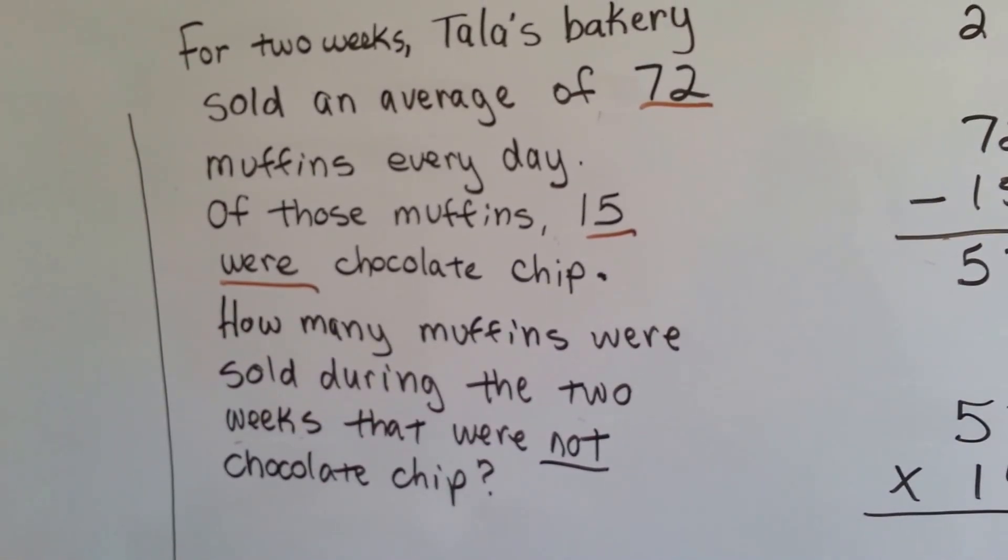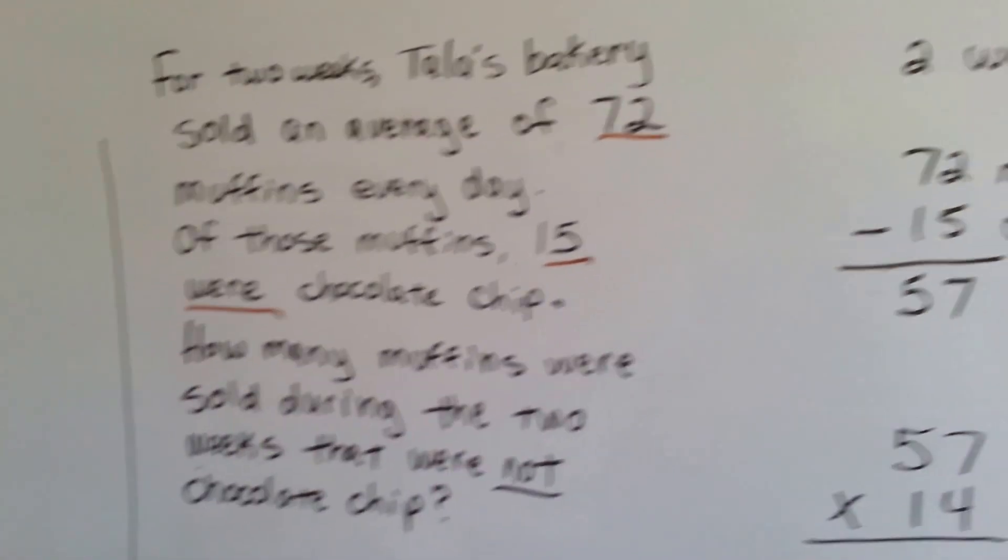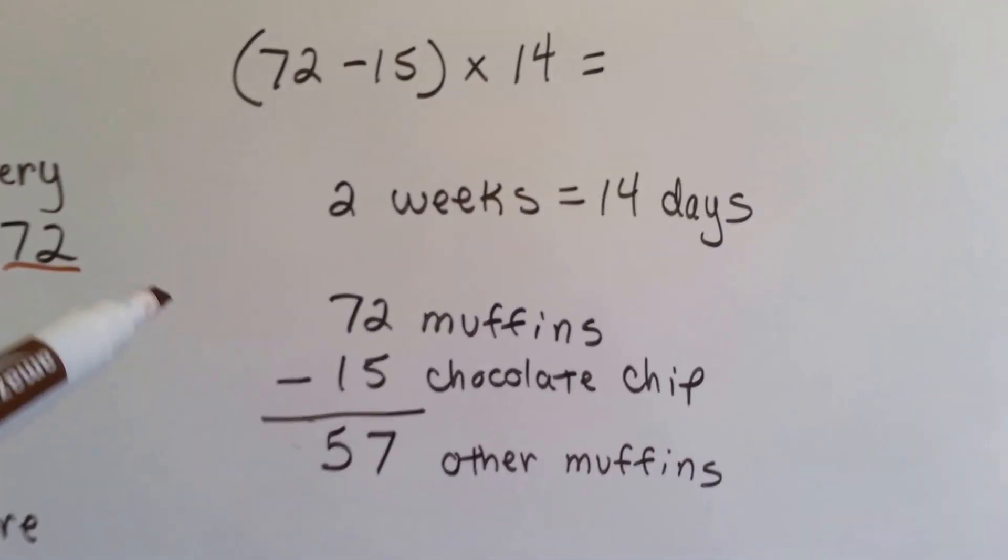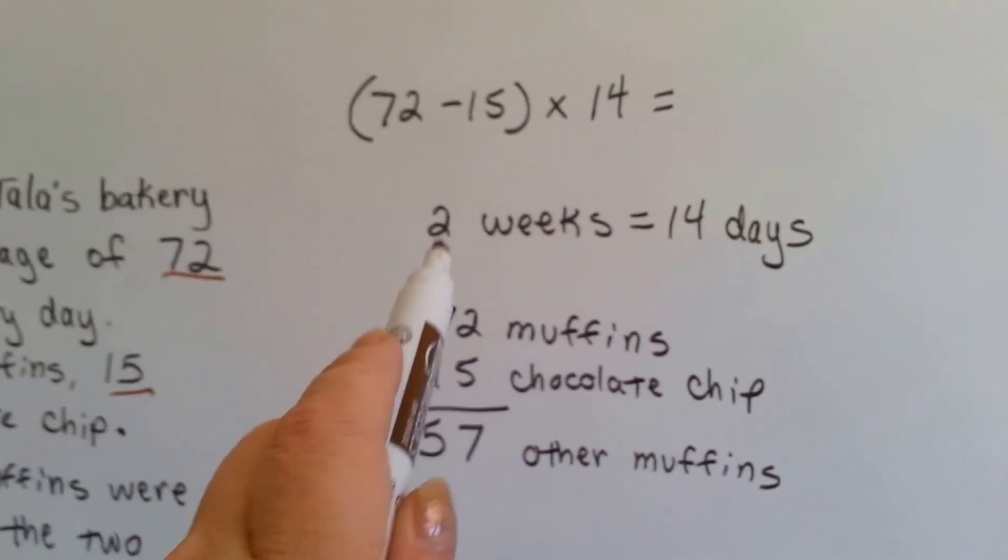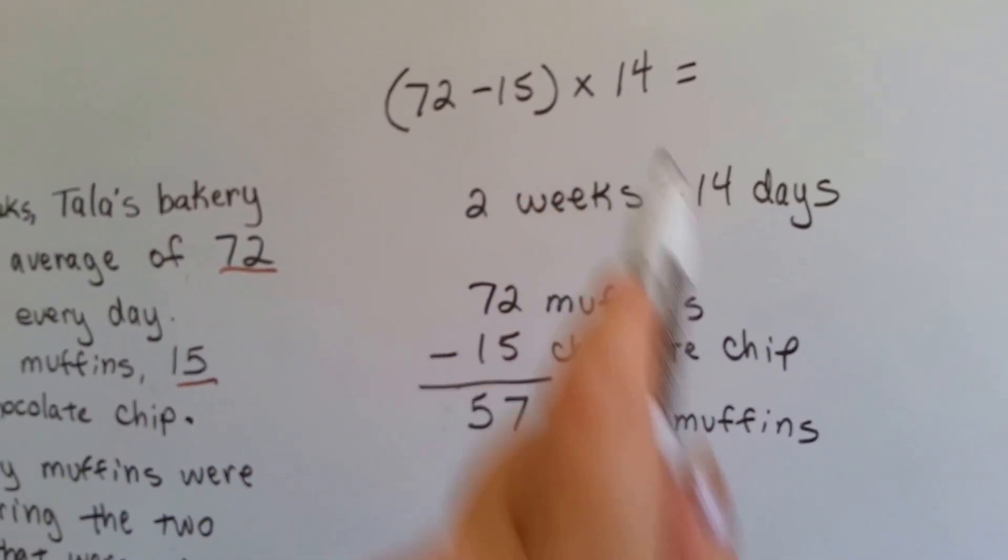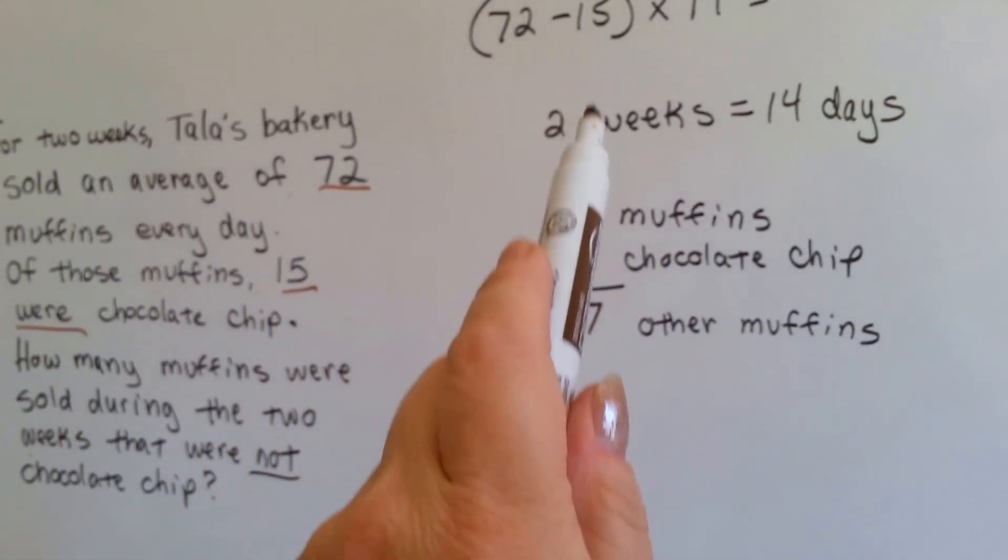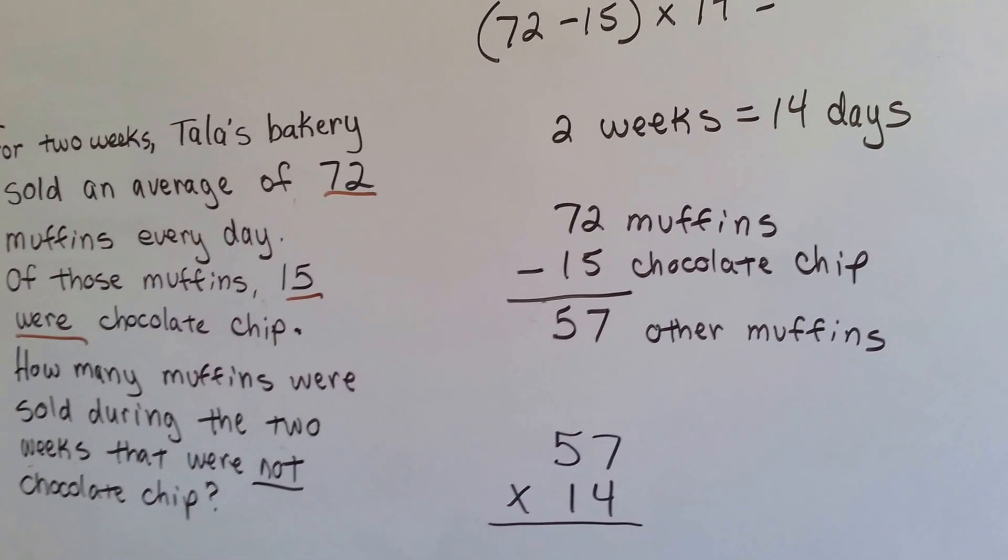There's seven days in a week. So two weeks would be 7 times 2, which is 14 days. So this is what our equation is going to look like. 72 minus 15 times the 14 days. The number of muffins minus the chocolate chip ones times the days of two weeks.